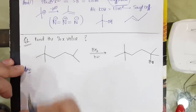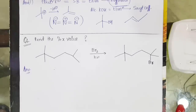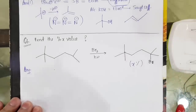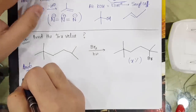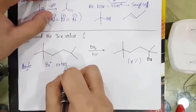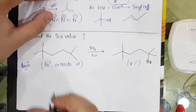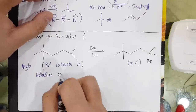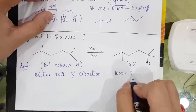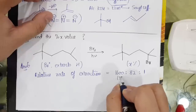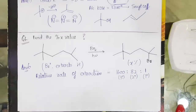Next question: find the value of x. If this compound is brominated in the presence of light (radical reaction), the given product is formed as x percent of total products. The Br radical extracts hydrogen. The relative rate of extraction of H by Br radical is: tertiary = 1600, secondary = 82, primary = 1.